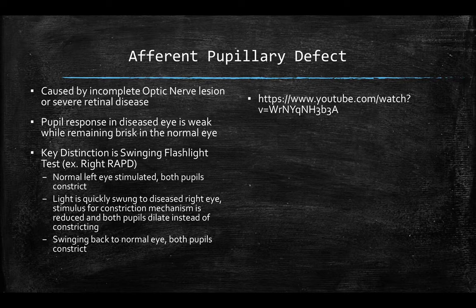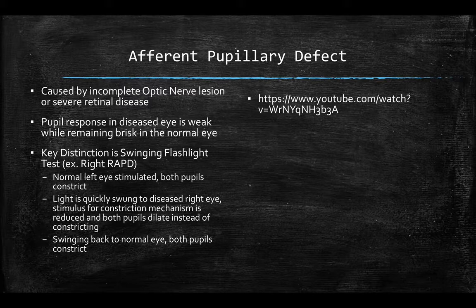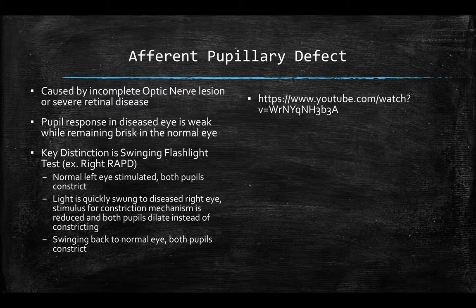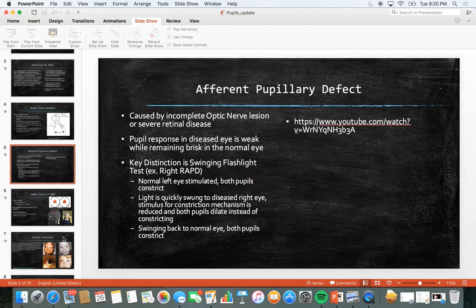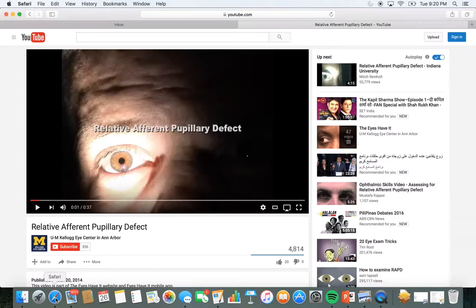Let's talk about what happens when you have a relative afferent pupillary defect (RAPD). This is caused by an incomplete optic nerve lesion or can be caused by severe retinal disease. The pupil response in the diseased eye is weak while it remains brisk in the normal eye. The key distinction in the swinging flashlight test is that when the normal eye is stimulated both pupils constrict, but when the light is swung to the diseased right eye the stimulus for constriction is reduced, so both eyes dilate. Swinging back to the normal eye, both pupils constrict.